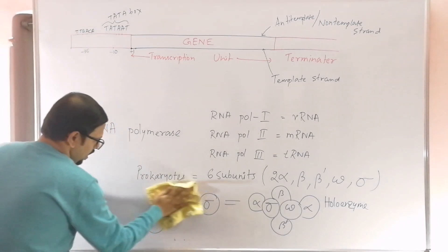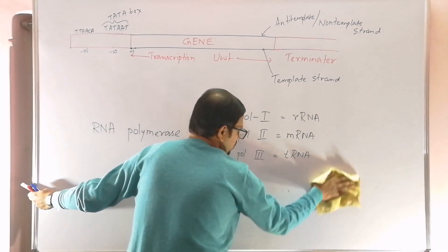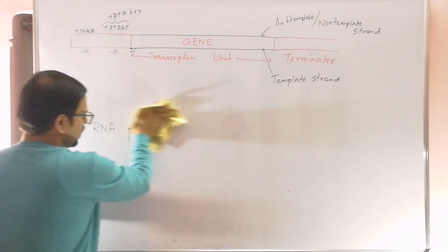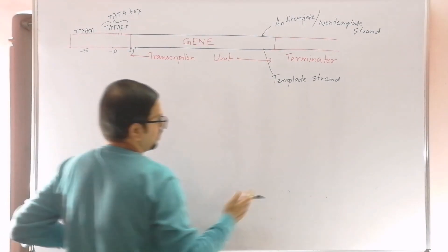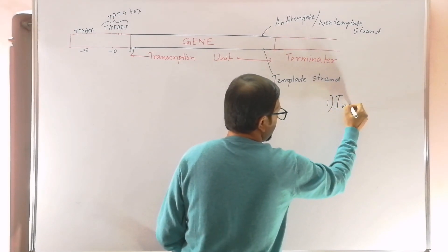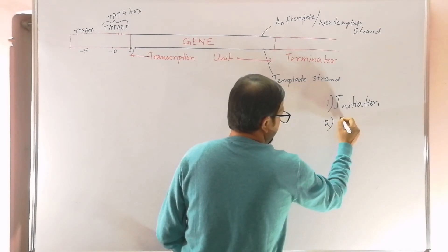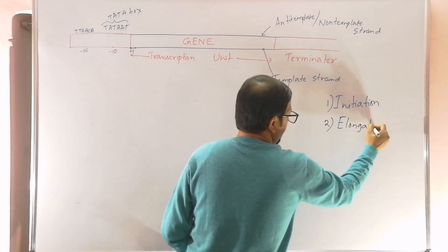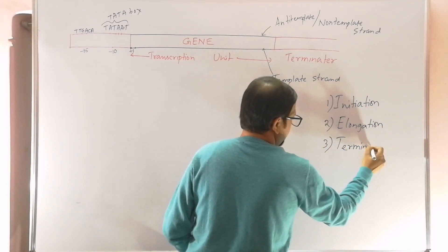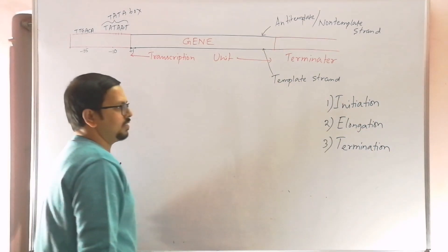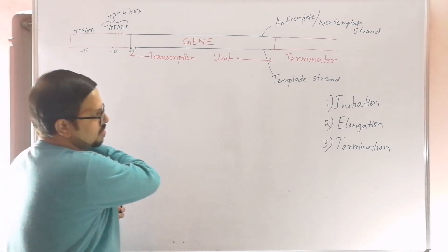The transcription process is accomplished in three steps: number one, initiation of transcription; number two, elongation of transcription; and number three, termination of transcription.